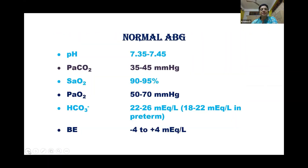What are the normal ABG values? The pH is 7.35 to 7.45. PaCO2 is 35 to 45 mmHg. PaO2 is 50 to 70 mmHg. SaO2 is 90 to 95%. Bicarbonate value in term babies is 20 to 26 mEq/L, and in preterm it is 18 to 22 mEq/L.